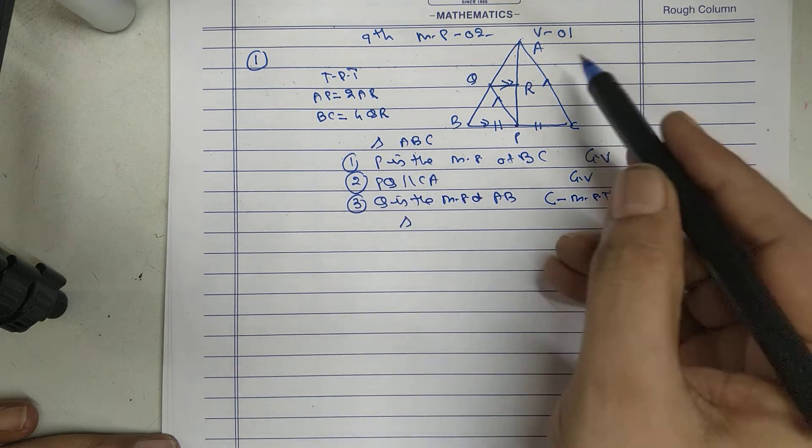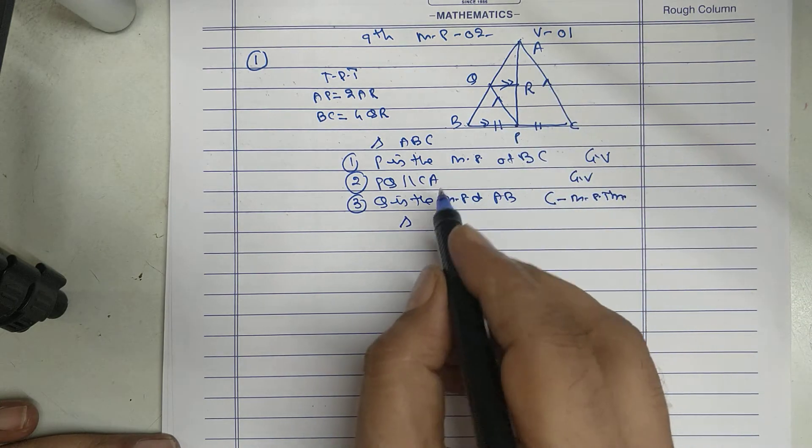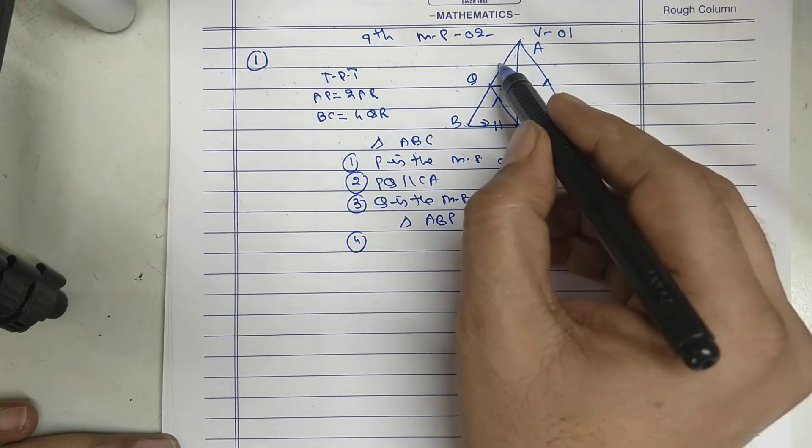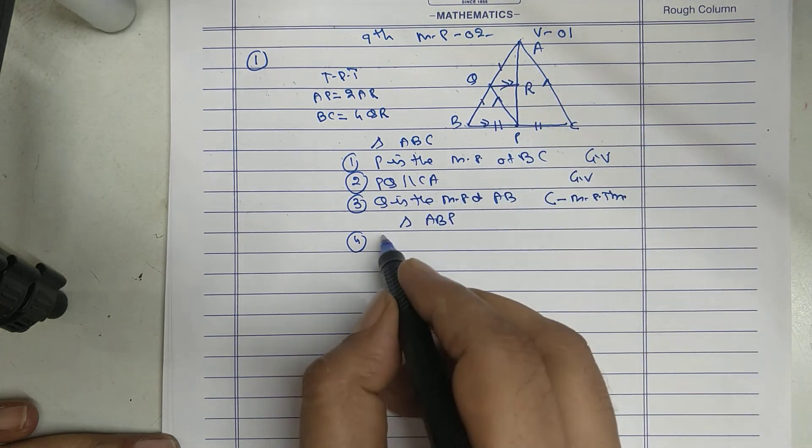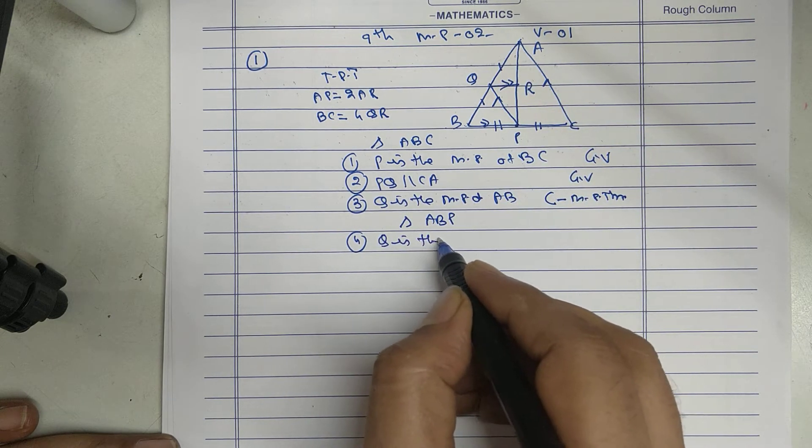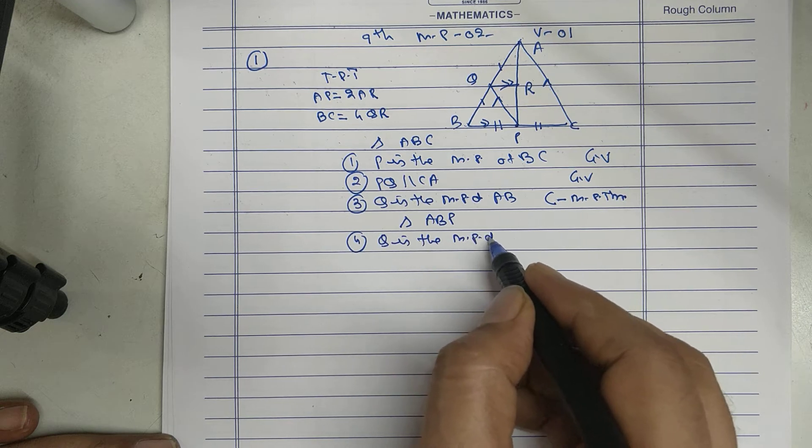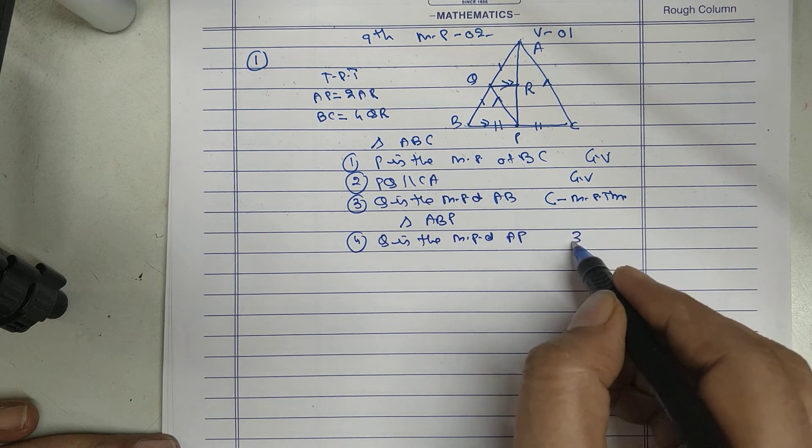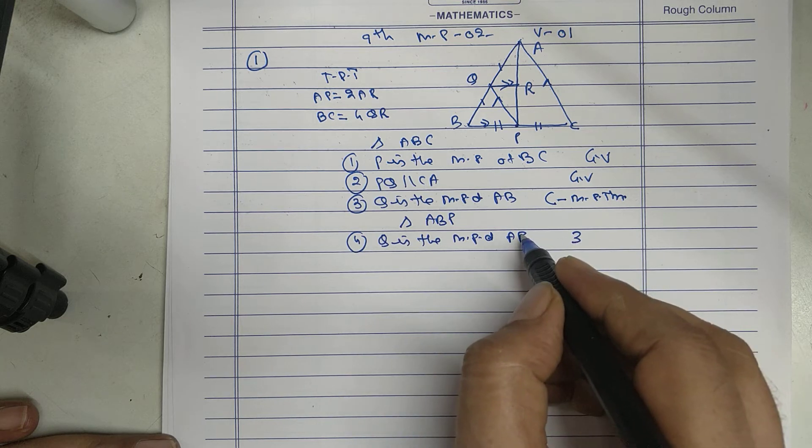Take triangle ABP. Q is the midpoint of AB. We proved in Statement 3.